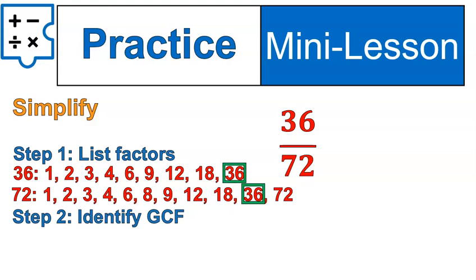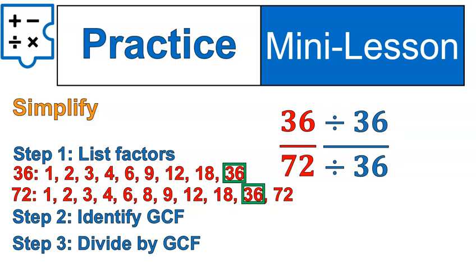Again, there's a lot of common factors there, but 36 is the greatest common factor. So we're going to divide the top and bottom by 36 and find that this fraction is actually equal to 5 out of 10, right? It's one half. 36 out of 72 is half. So that's the fraction we've been working with quite a bit today.